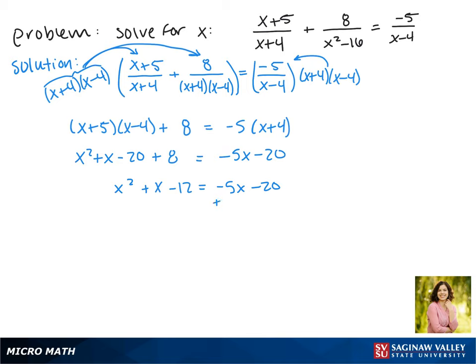Now, in order to factor this quadratic, we want to get all of our terms on one side and zero on the other. So we're moving that 5x over and moving our 20 over, and we get x²+6x+8=0.